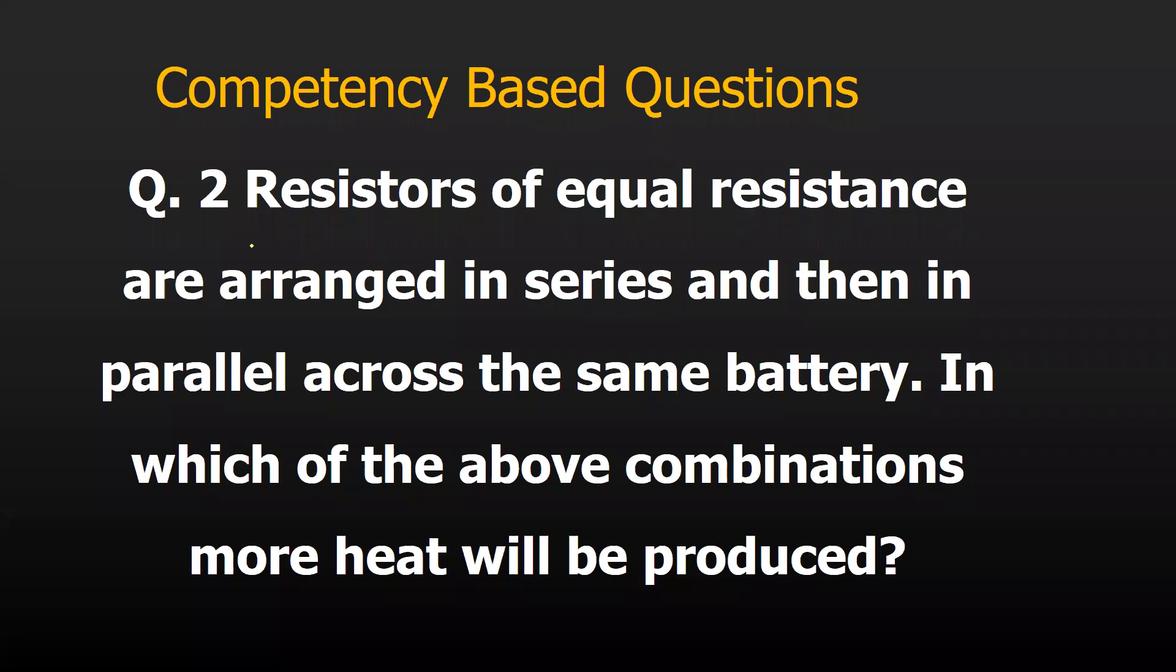Hello everyone. So the question is two resistors of equal resistance value. They are arranged in series. Later they are arranged in parallel for the same battery. That means the potential difference is constant and which of the following combination more heat will be produced? That is the question.